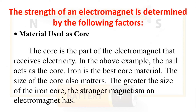The strength of an electromagnet is determined by the following factors. First: Material used as core. The core is the part of the electromagnet that receives electricity. In the example, the nail acts as the core. Iron is the best core material. The size of the core also matters — the greater the size of the iron core, the stronger the magnetism an electromagnet has.